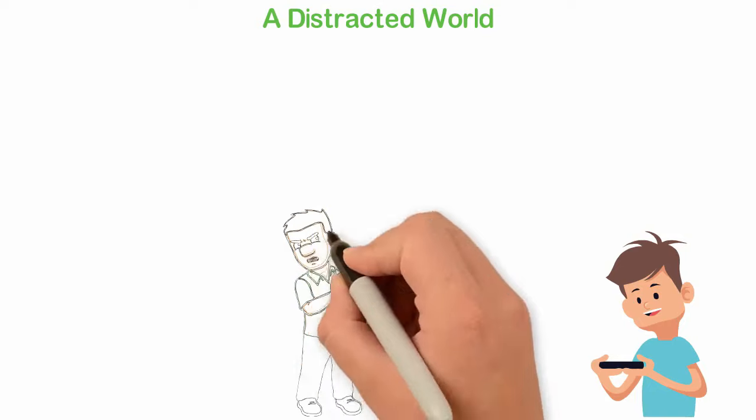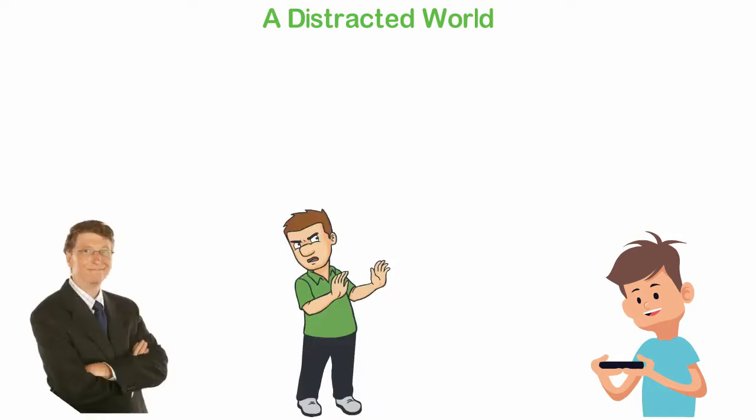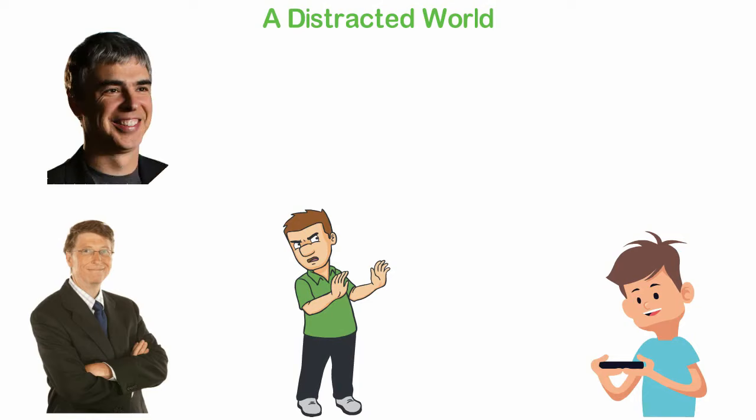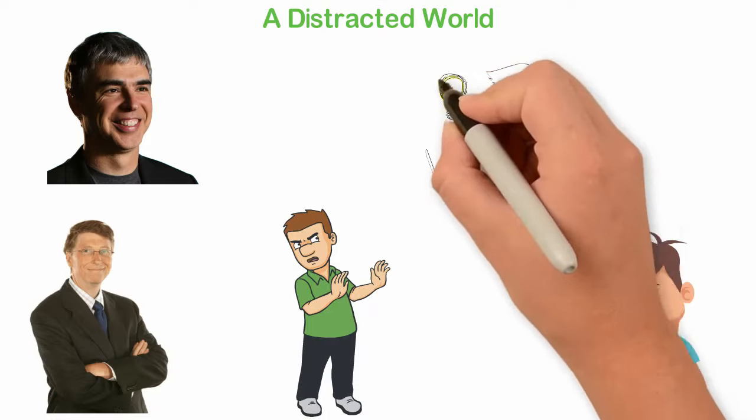What most successful people do is avoid distractions in their 20s. Bill Gates lived all his 20s building and creating without having any reasonable vacations. Larry Page started dreaming of becoming an inventor as a teenager and followed that passion all his 20s.